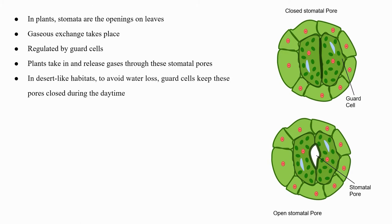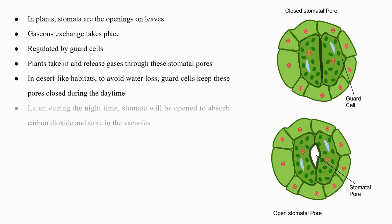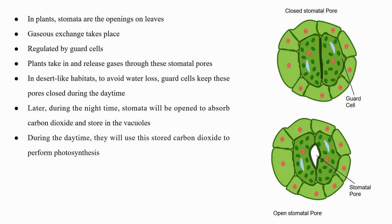In desert-like habitats, to avoid water loss, guard cells keep these pores closed during the daytime. During the night-time, stomata open to absorb carbon dioxide and store it in the vacuoles. During the daytime, they use this stored carbon dioxide to perform photosynthesis.